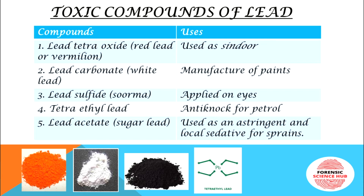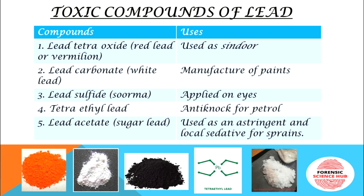Lead acetate is also called sugar of lead because it looks like sugar crystals. It is used as an astringent and local sedative for sprains. Tetraethyl lead is absorbed rapidly from the skin, lungs, and gastrointestinal tract, and is converted to triethyl lead in the body. This triethyl lead form is responsible for the toxic effects.